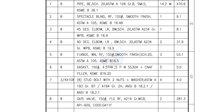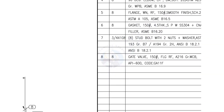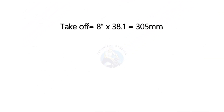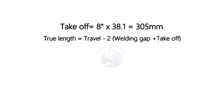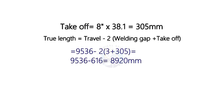Let us calculate the true length of the pipe. To calculate the true length, we need to know two things: the take-off length and the welding gap. The formula for the take-off of a long radius 90-degree elbow is the diameter in inches multiplied by 38.1. Assuming the welding gap is 3 millimeters, the cut length is 8,920 millimeters.